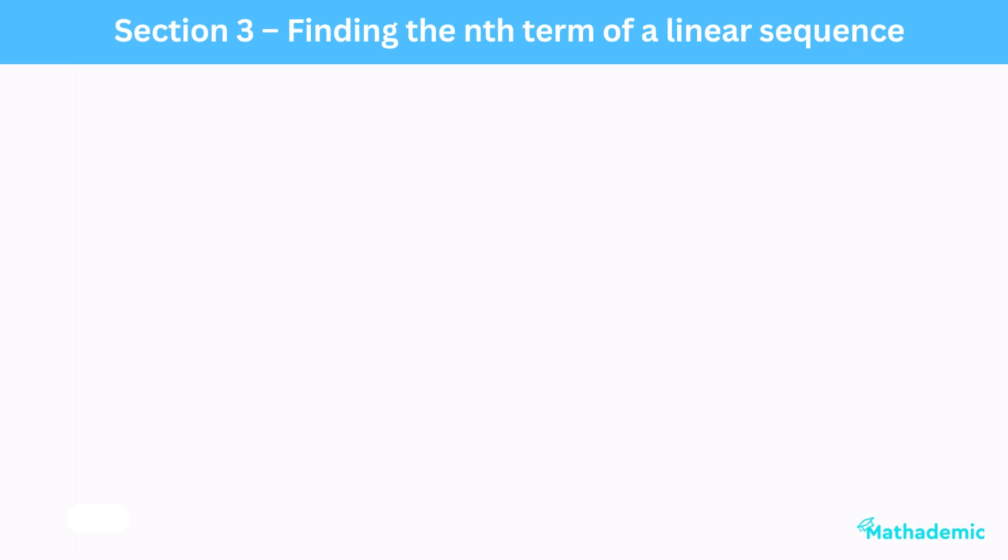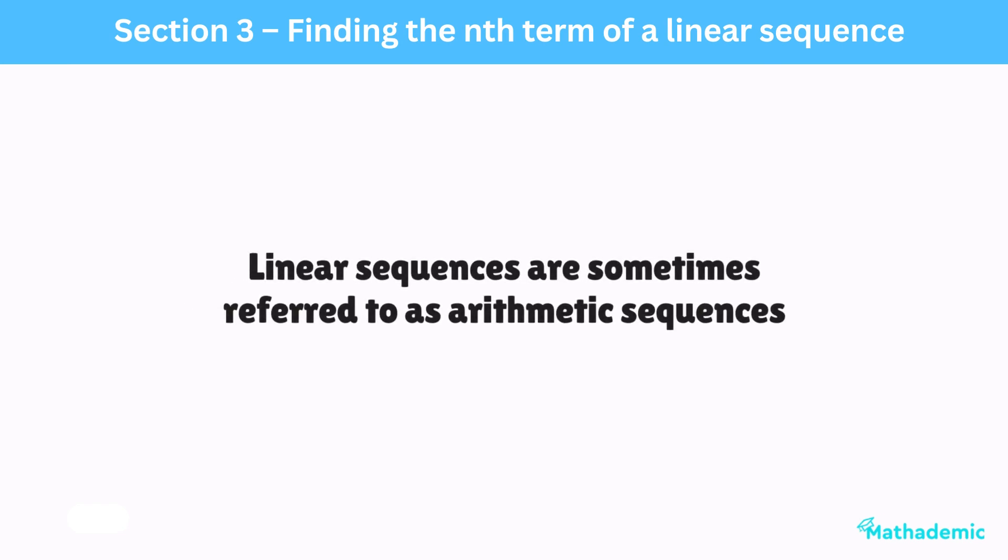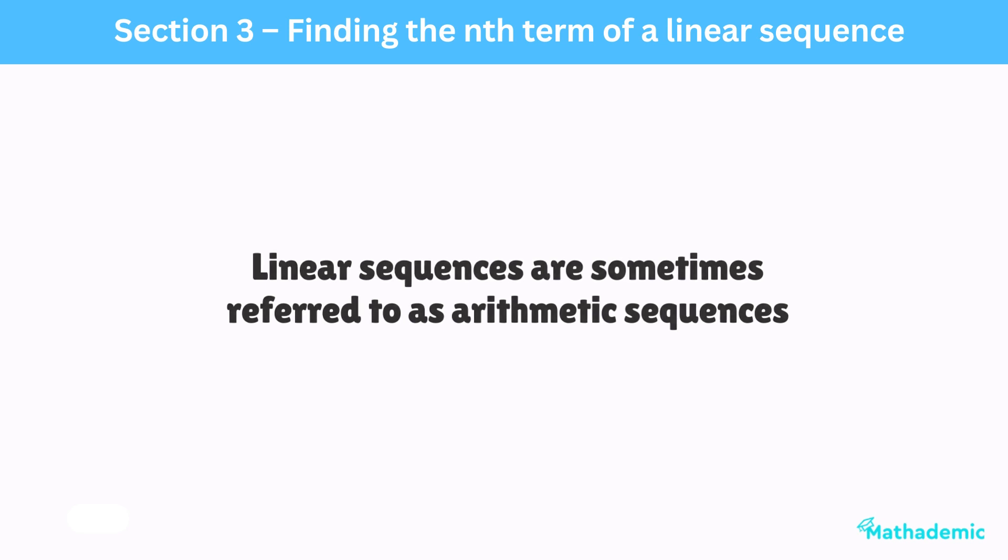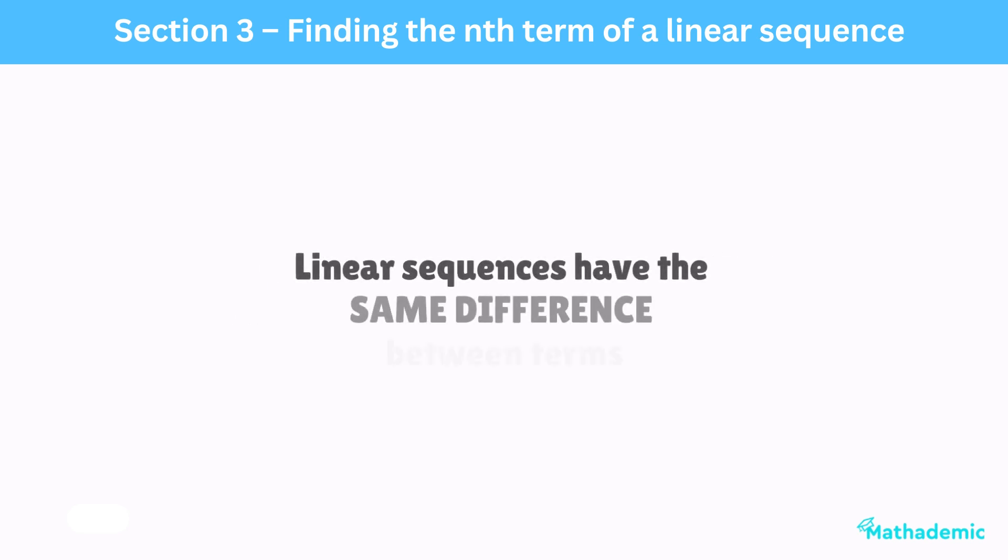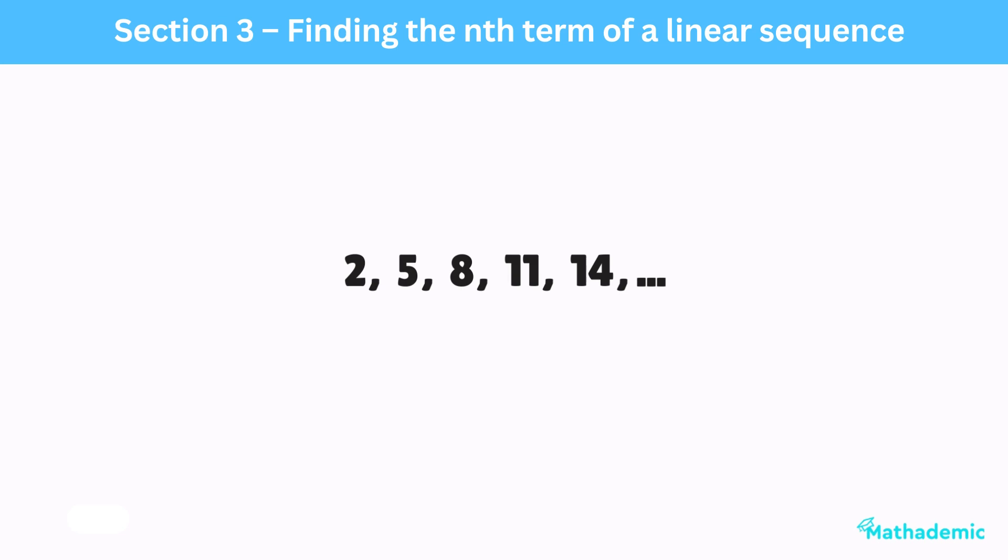Section 3: Finding the nth term of a linear sequence. The next section deals with finding the nth term of a linear sequence. Note that linear sequences are sometimes referred to as arithmetic sequences. The key idea here is that linear sequences always have the same difference between terms. For example, the sequence 2, 5, 8, 11, 14 has a common difference of 3 between terms, so it's a linear sequence.